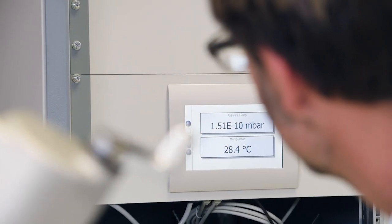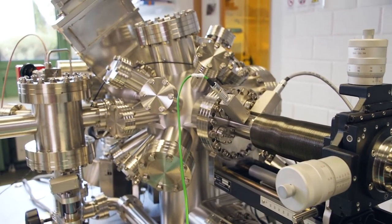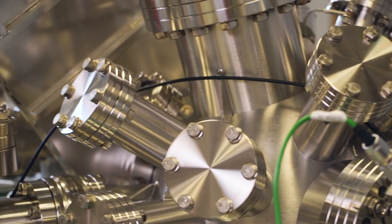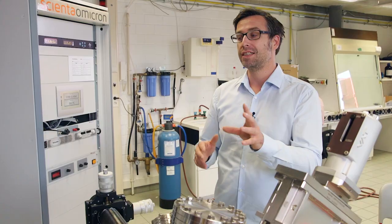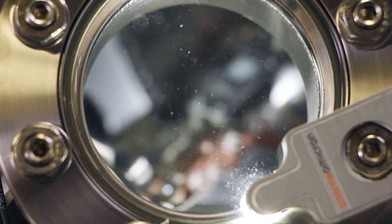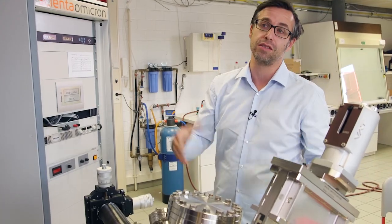This is a scanning tunneling microscope or an atomic force microscope. And this enables us essentially to look at surfaces with atomic resolution, with atomic precision. Since we are looking so local, we also see all the dirt. And this is why this microscope is essentially embedded into a vacuum chamber.